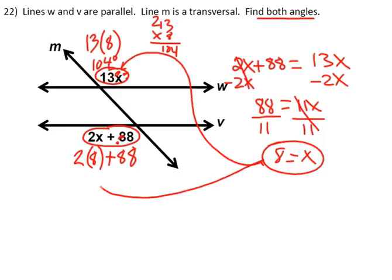Substituting the 8 again in for x is 16 plus 88. And 16 plus 88 is indeed 104 degrees. So that's not 1,040. That's 104 degrees. So this angle here is 104, and this angle here is 104.